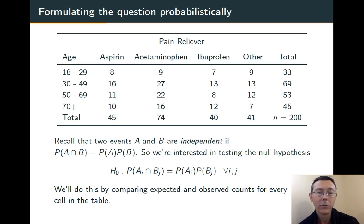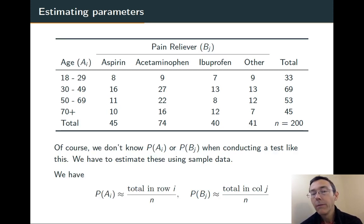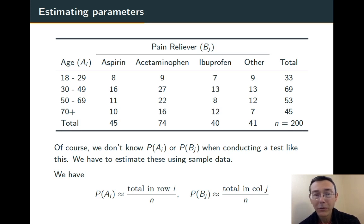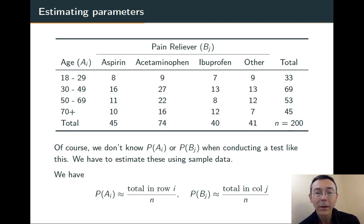We're going to do this the same way we always do with chi-squared: compute expected numbers of outcomes — expected counts for each of the cells in this table — and compare them to what we actually got. We don't actually know the probabilities that individuals will have certain ages or certain preferences for pain relievers, so we'll estimate these parameters with sample statistics. For example, for ages, which we'll call A_i, we take the total number in our sample that fall into each age group and divide by the total sample size. For example, for ages 18 to 29, we have 33 of them, so we estimate that probability as 33 over 200. We'll do that for each of the rows, and then for each of the columns as well, labeling the pain reliever categories as B_j.